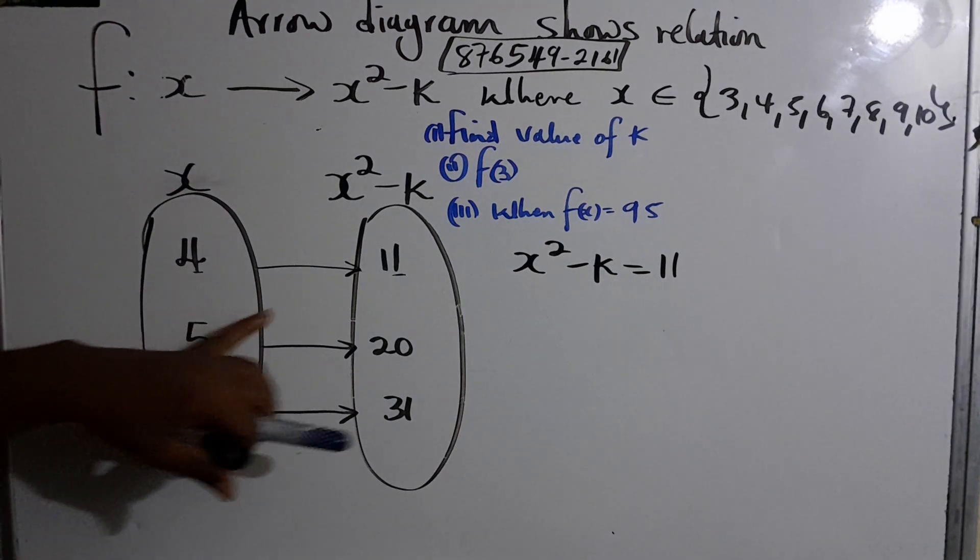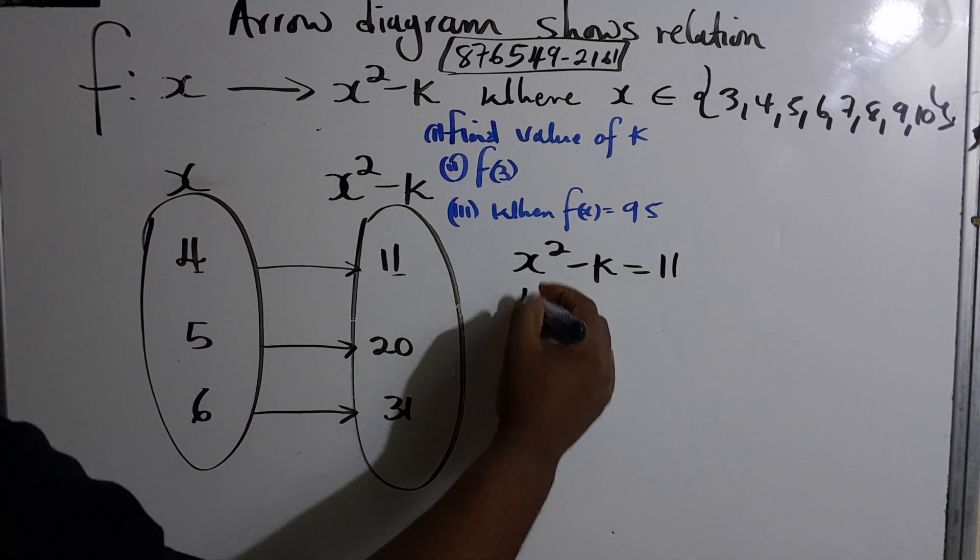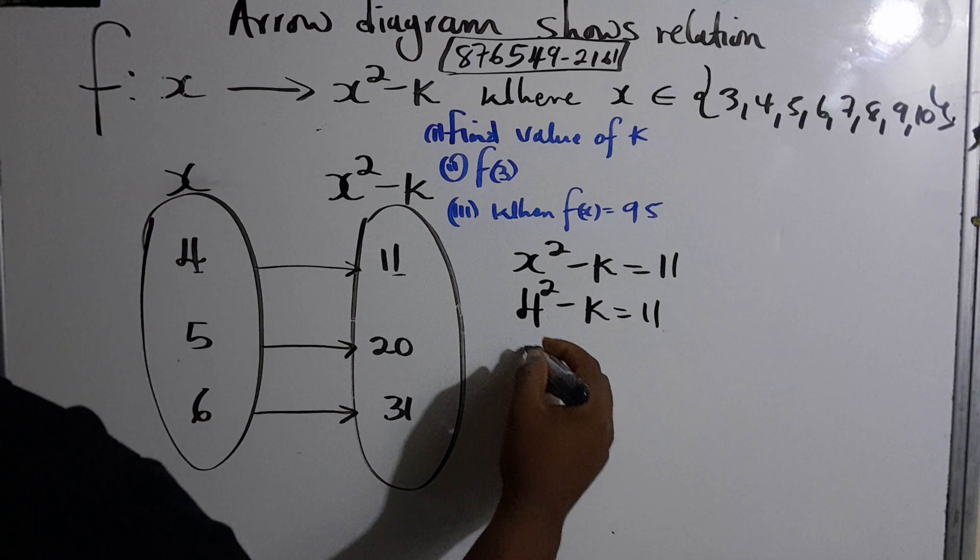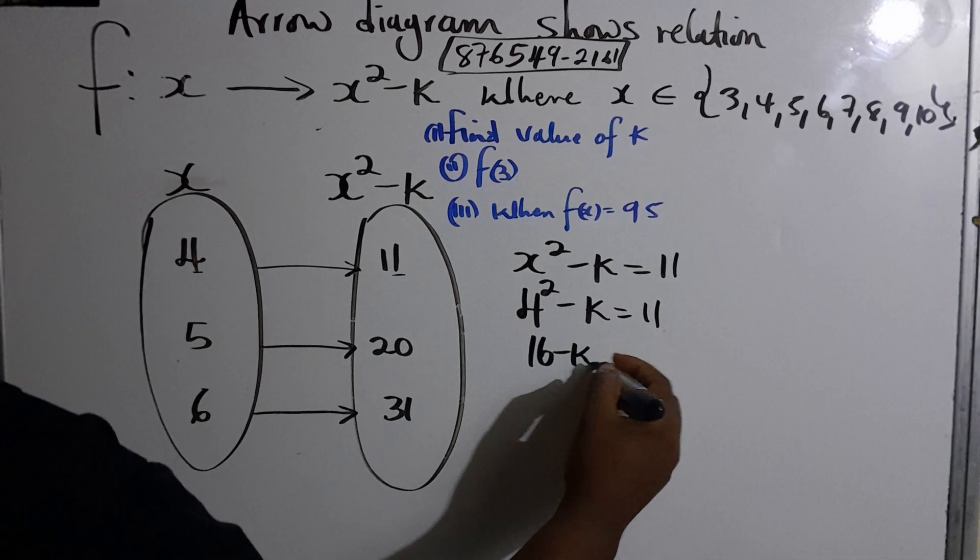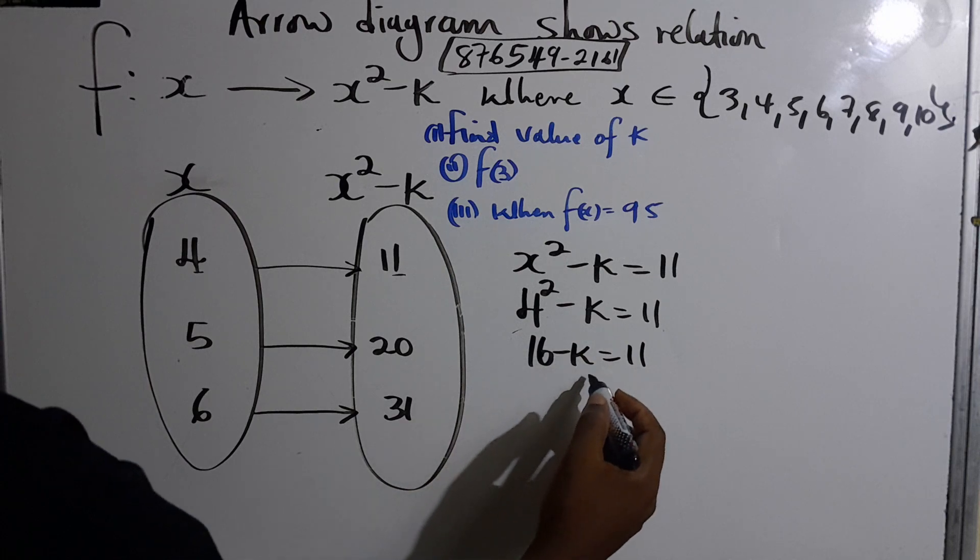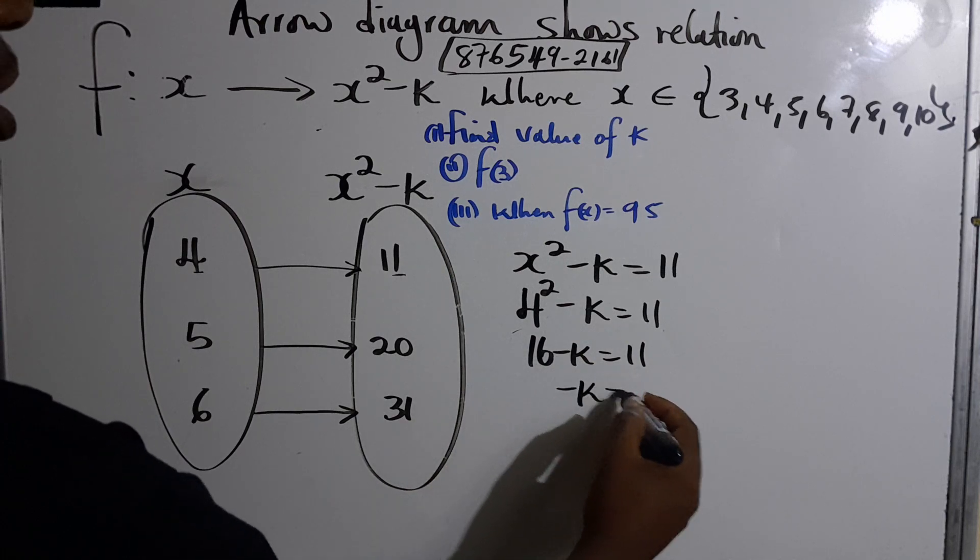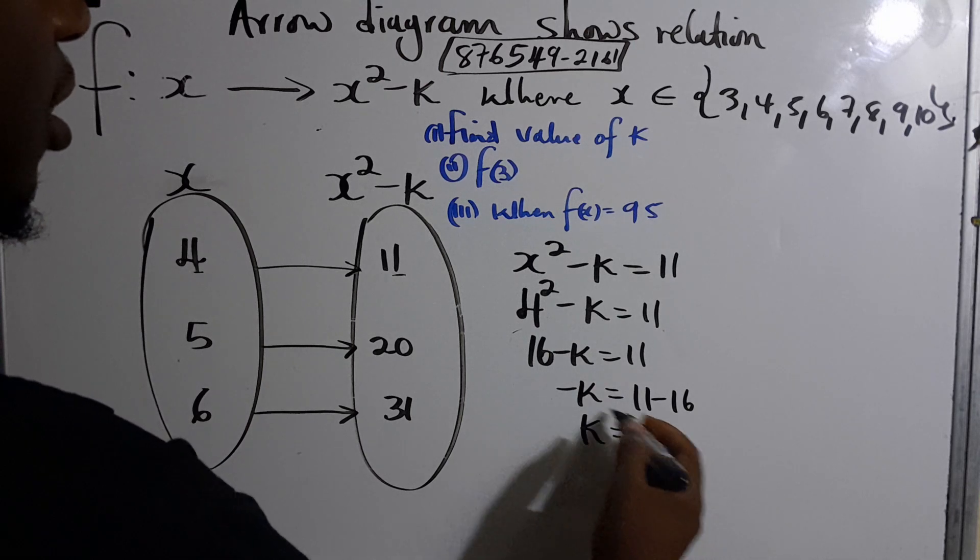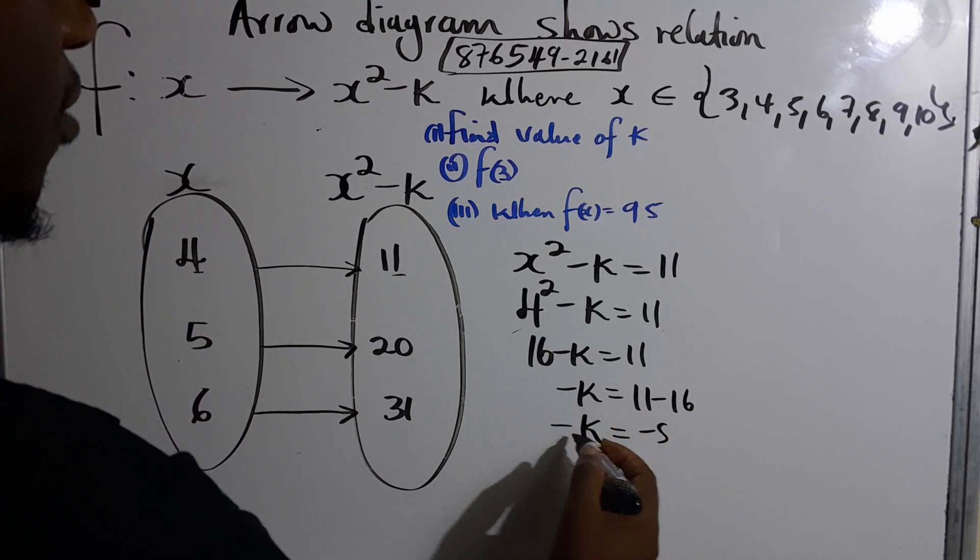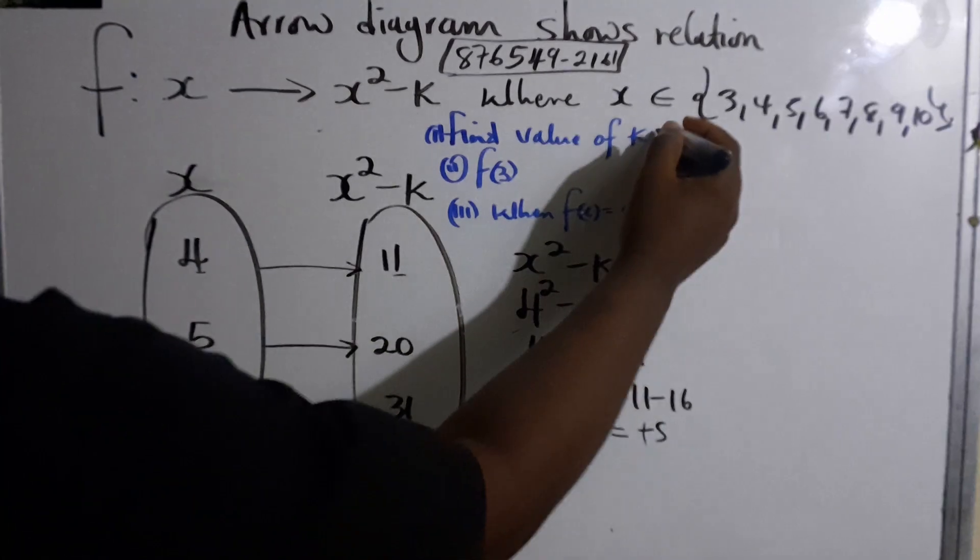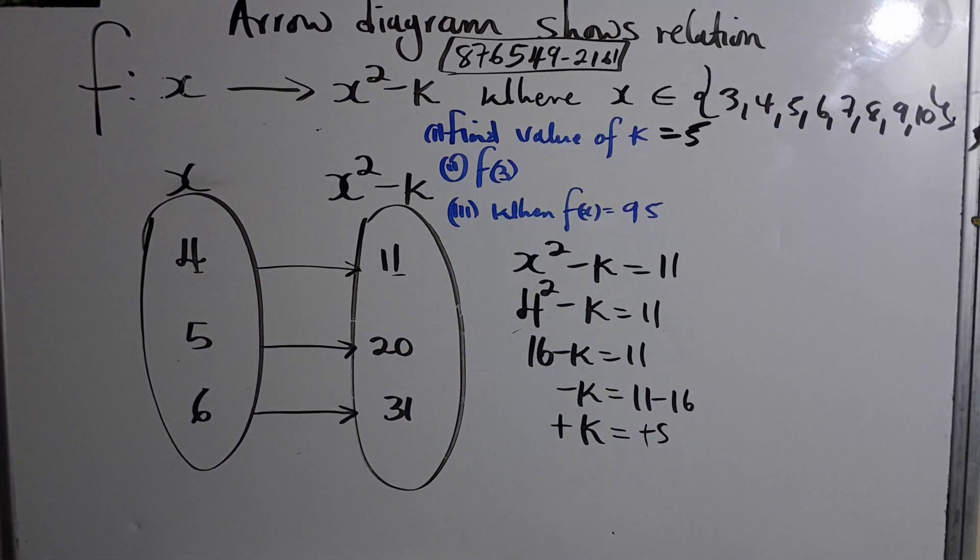We know the value of x to be 4, that was given. So we square it, that gives us 16 - k = 11. Subtract 16 from both sides, so -k = 11 - 16. Therefore k = -5, negative cancels negative, so the value of k = 5.